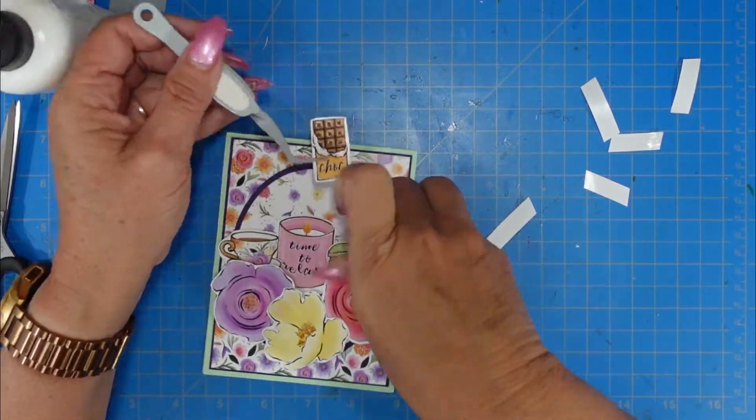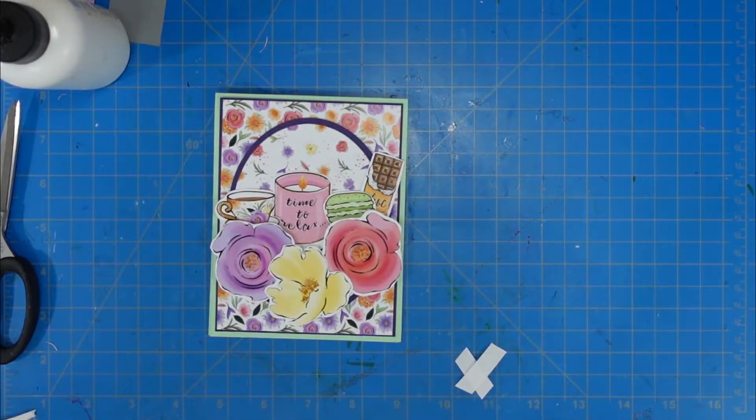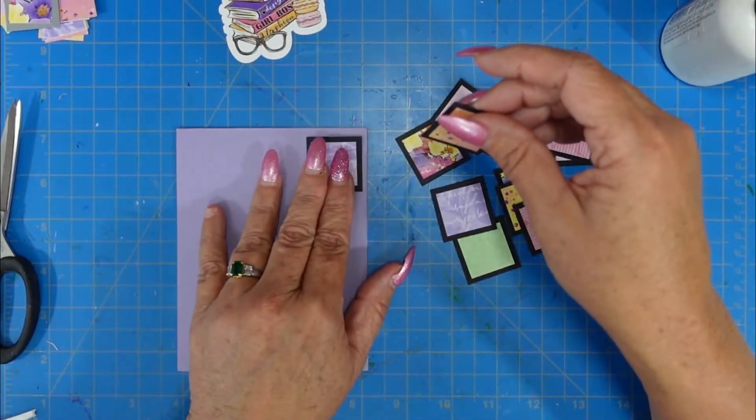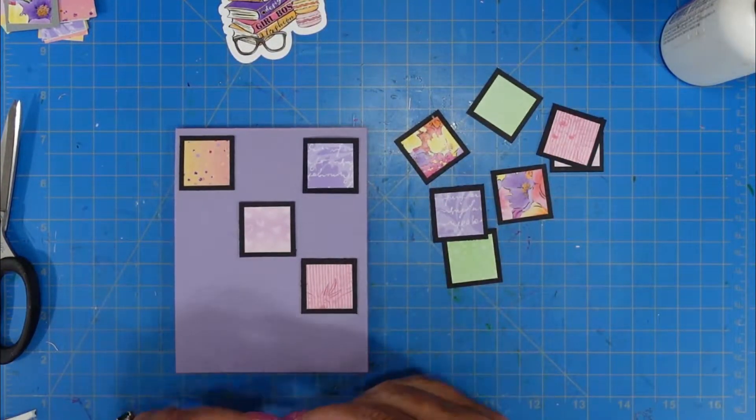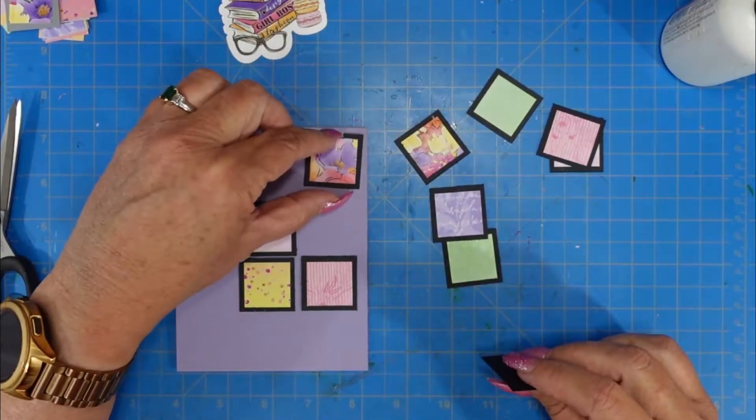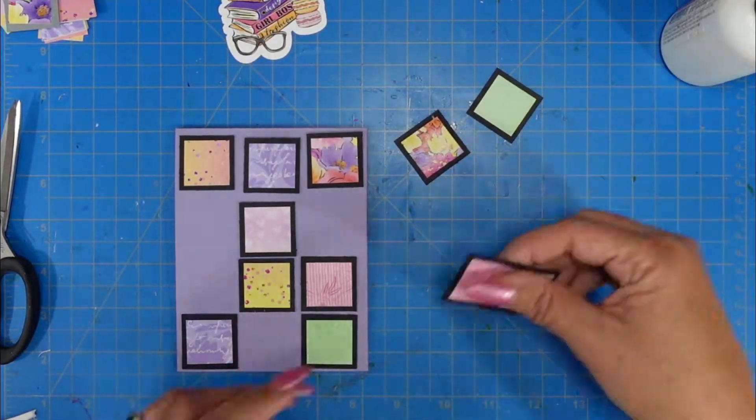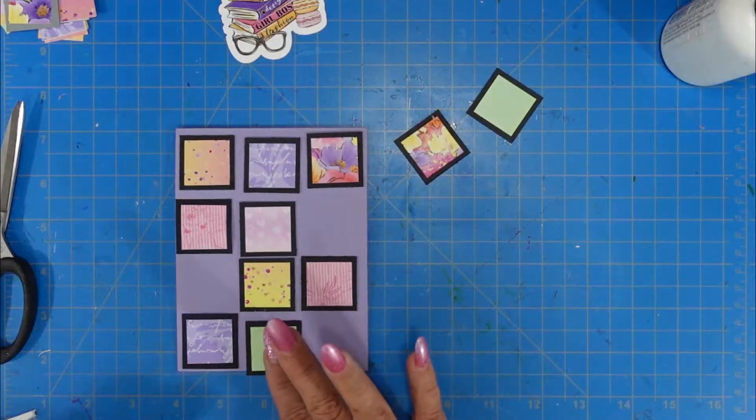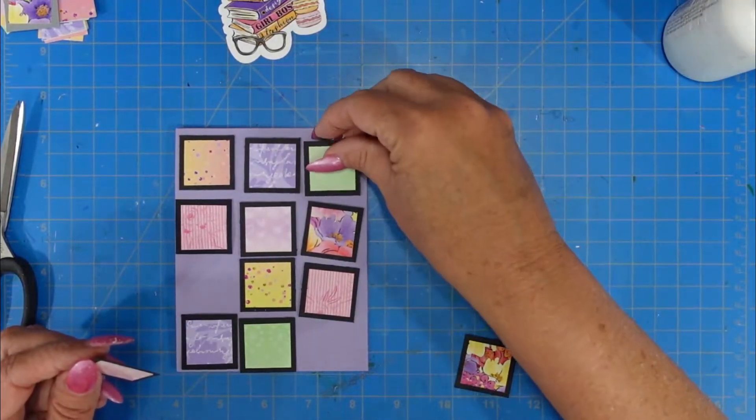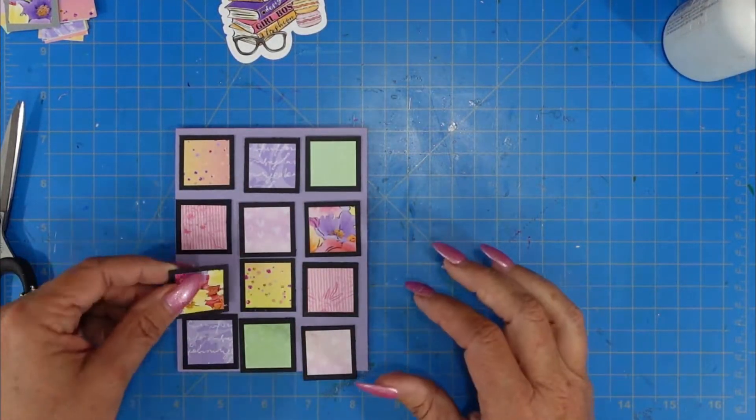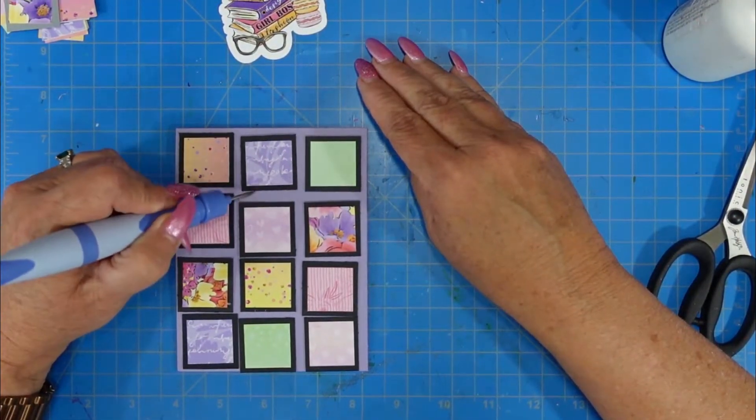Card number three, I decided to go with inchies. So I had still some leftover pattern paper that I wanted to use, and I decided that I was going to cut the different pattern papers that I had already used into one inch squares, and then I took some black cardstock and I cut them down to one and a quarter inch squares. I adhered the pattern paper to the center of the black one and a quarter inch squares, and those are my inchies for my card. So I'm going to be able to fit 12 of them onto this top folding four and a quarter by five and a half inch card base.